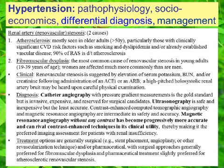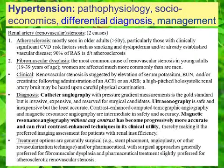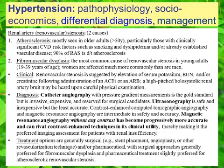The next cause of hypertension to consider is renal artery stenosis. We will focus on two main causes, the first of which is atherosclerosis. This is seen mostly in older adults over the age of 50, particularly those with clinically significant cardiovascular disease risk factors such as smoking, dyslipidemia, and/or already established peripheral vascular disease.